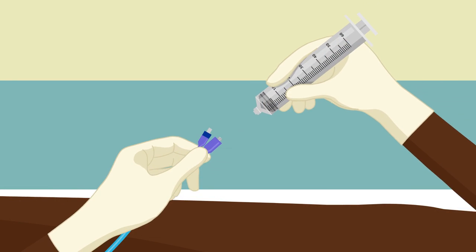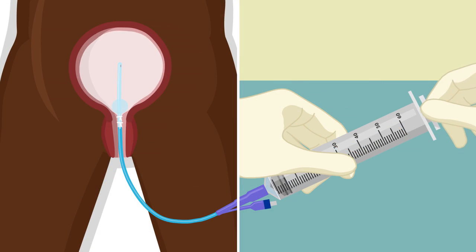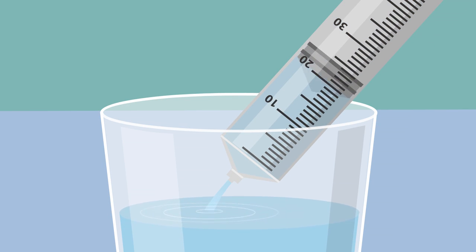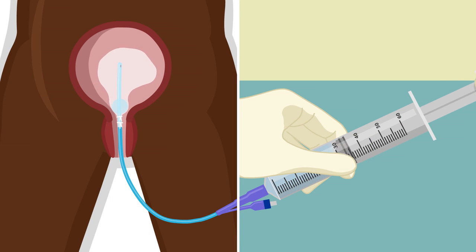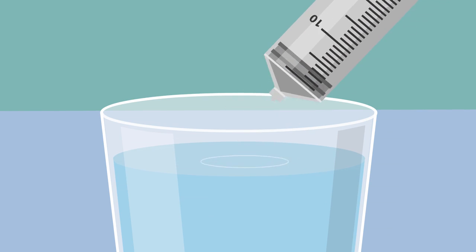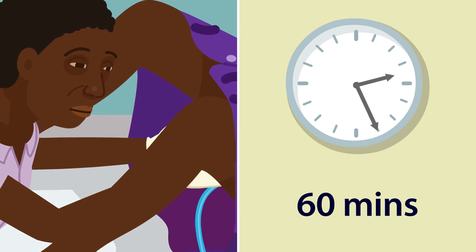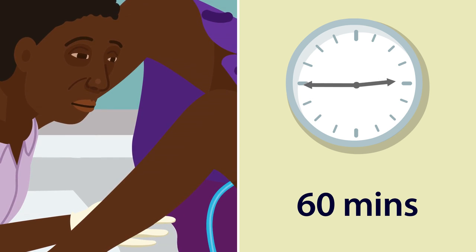In order to remove the UBT, Grace attaches the syringe to the catheter and slowly draws out one or two syringes full of water to lower the pressure without taking out the balloon. She watches for 60 minutes. If the bleeding starts again, Grace must refill the balloon with clean water and arrange for Mary to go to the nearest hospital.